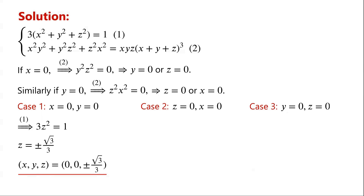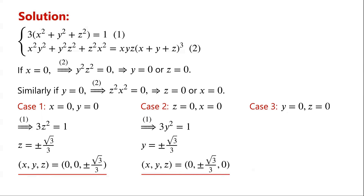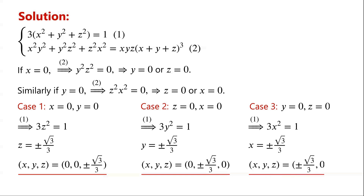If z equals zero and x equals zero, then equation one becomes 3y squared equals one. So y equals plus or minus root three over three. So (x, y, z) equals (0, ±√3/3, 0). Case three: y equals zero and z equals zero. Then equation one becomes 3x squared equals one. So x equals plus or minus root three over three. So (x, y, z) equals (±√3/3, 0, 0).